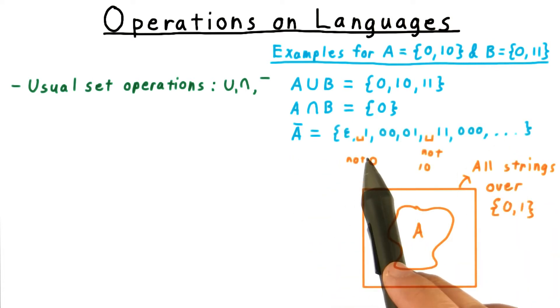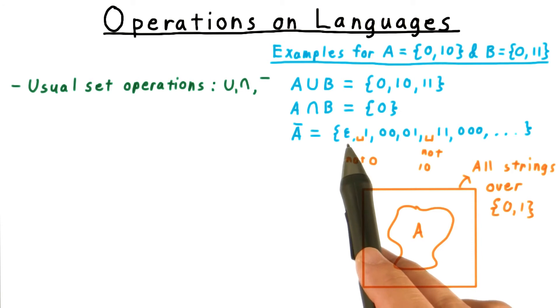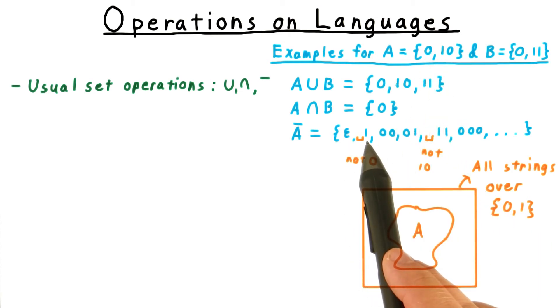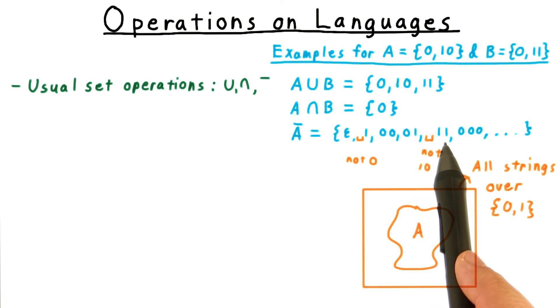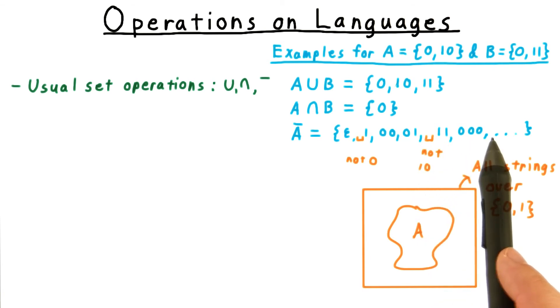In this case, the complement of A will be infinite, including the empty string. Not 0, however. It will include 1, it will include 00, it will include 01. It will not include 10, however. It will include 11, it will include 000, and so on and so forth for all longer strings.